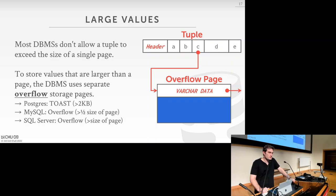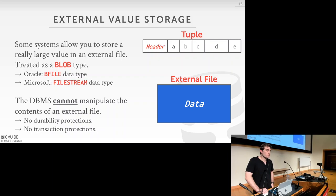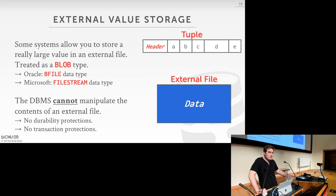This is called different things in different systems. Postgres calls it TOAST, which kicks in if the value is greater than 2 kilobytes. MySQL's threshold is greater than half the size of the whole page. SQL Server triggers this when the value exceeds the page size. An alternative is to store large objects externally to the DBMS.